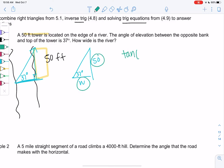So tangent of 37 degrees is 50 over W. Multiply by W, and then we'll divide by tangent. And we'll just use calculators to approximate, because this is not a unit circle value.